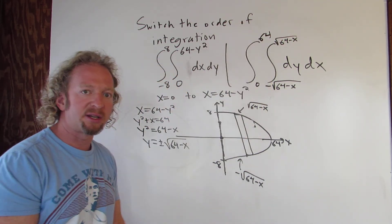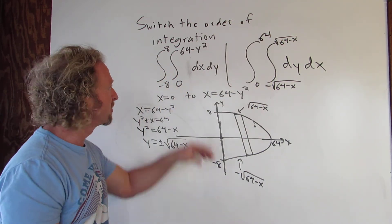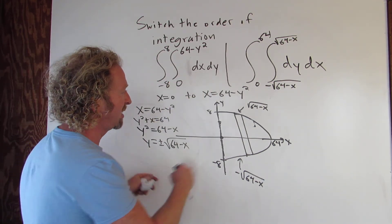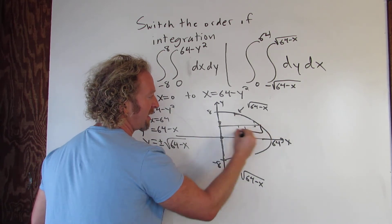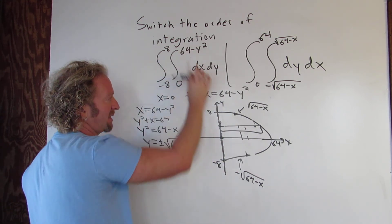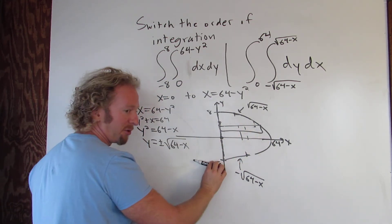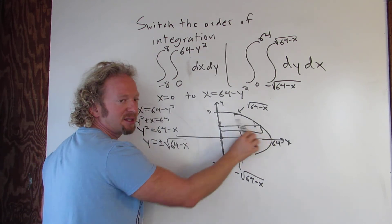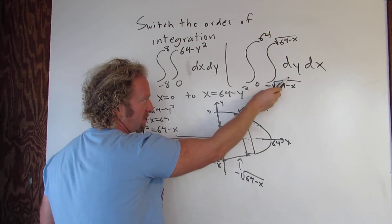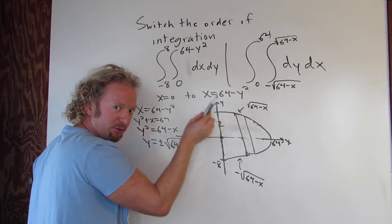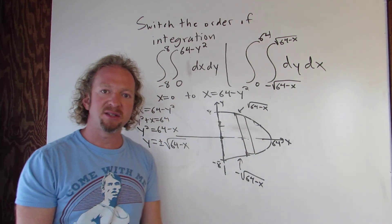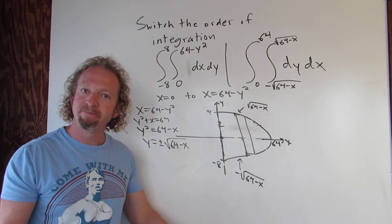Both of these definite integrals give the same area. To recap: in the original form, we integrated with respect to x first using horizontal rectangles, going from 0 to 64 minus y squared, then y from negative 8 to 8. In the switched form, we integrate with respect to y first from negative to positive square root of 64 minus x, then with respect to x from 0 to 64. This is one of those topics that's kind of hard for people, but that's it.